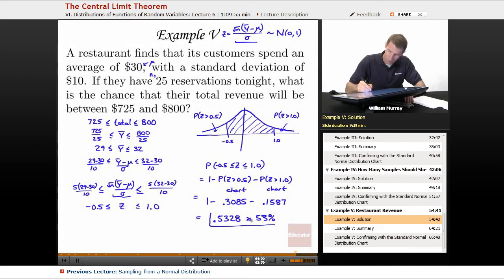I could have done that by hand, that wouldn't have been that bad. And if you wanted to estimate that, that would be just 53%. So that's the probability that this restaurant is going to, their total profit for tonight is between $725 and $800 tonight.